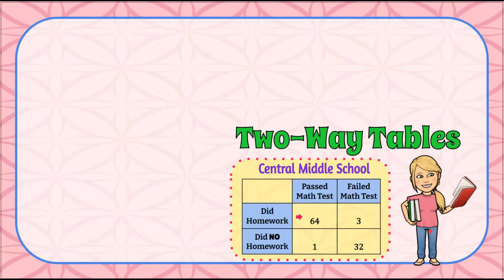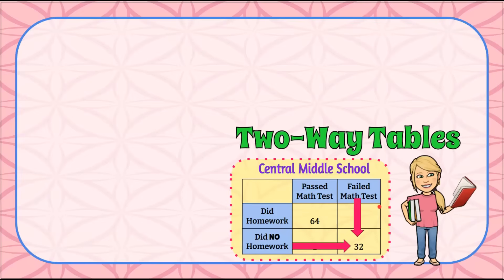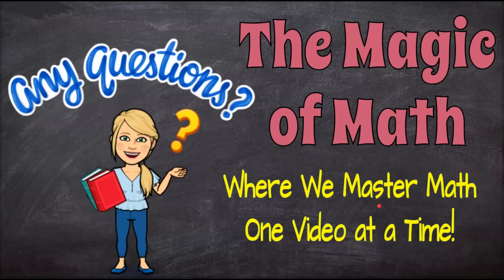And there you have it — two-way tables: how to read them, interpret them, calculate marginal frequencies, relative frequencies, and determine correlation or if a relationship exists. Thanks for joining me today at The Magic of Math, where we continue to master math one video at a time. Don't forget to subscribe and have a great day.